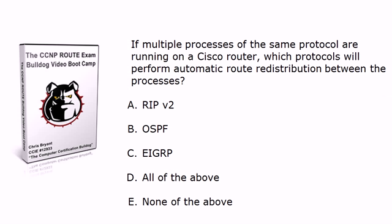Question three: If multiple processes of the same protocol are running on a Cisco router, which one of these will perform automatic route redistribution between the processes? That sounds like something we better know. Are we looking at RIP version 2, OSPF, EIGRP, all of them, or none of them?